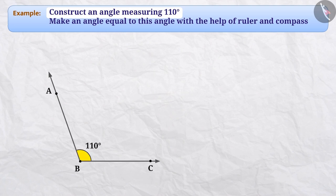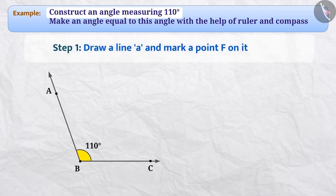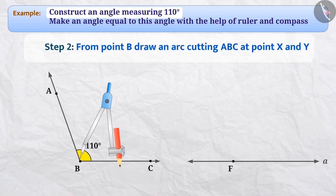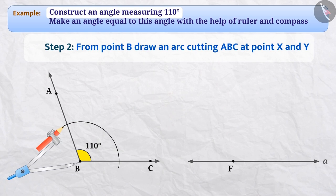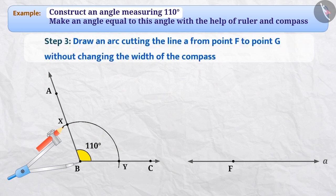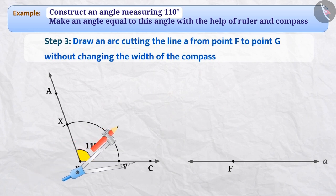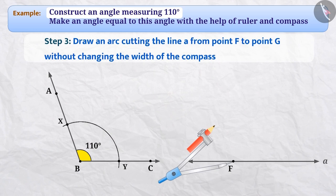Now, we have to make an angle equal to angle ABC with the help of ruler and compass. Step 1: Draw a line and mark a point F on it. Step 2: We will draw an arc by placing the pointed end of the compass at point B, which will cut the sides of angle ABC at points X and Y. Step 3: We will then place the pointed end at point F without altering the width of the compass, and draw an arc that cuts the line at point G.